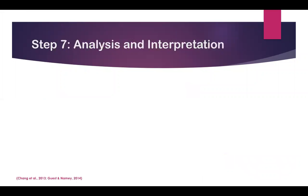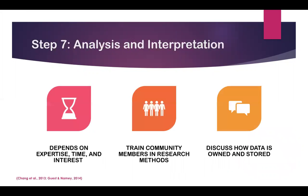Step 7 of CBPR is analysis and interpretation. This step depends on the availability of expertise, time, and interest of community members. If they are interested in learning more about the research process, experts in the field will need to train community partners in data analysis. In the CBPR case study with immigrant restaurant workers, nine partners were provided extensive training in research methods and were therefore able to enhance the interpretation of data gathered due to their unique cultural understanding of the target population. Step 7 also includes discussing data ownership, including a clear conversation between community partners and researchers on how data is stored and used.